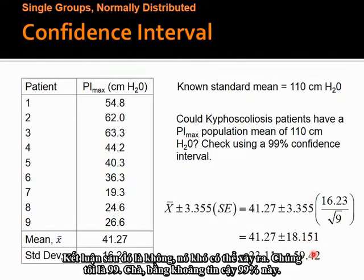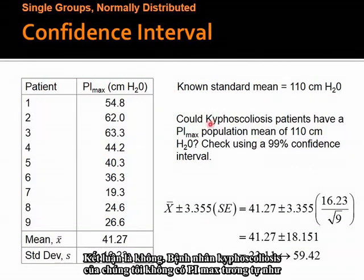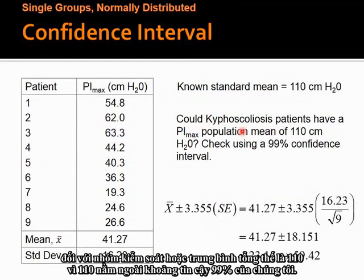The conclusion is that, by this 99% confidence interval, our kyphoscoliosis patients do not have a similar PI max to the control group or the compared population mean of 110, because 110 lies outside our 99% confidence interval.